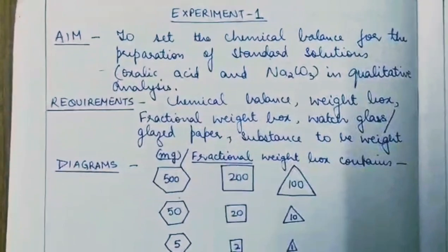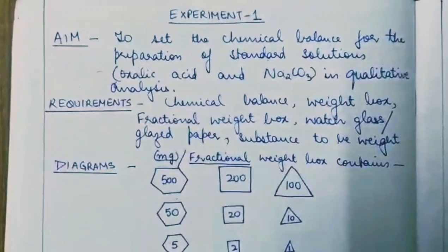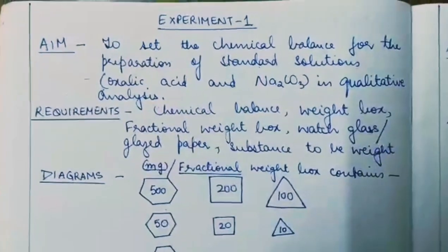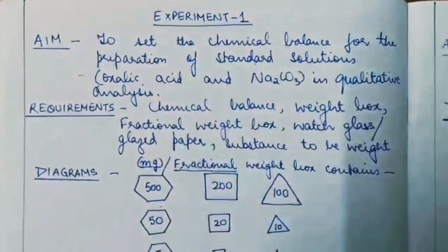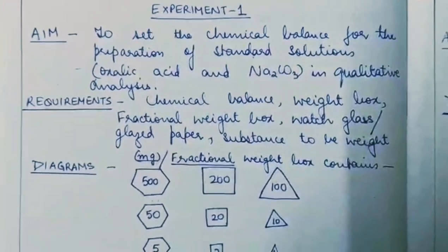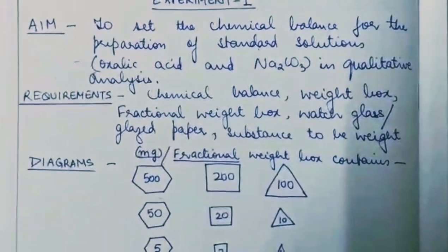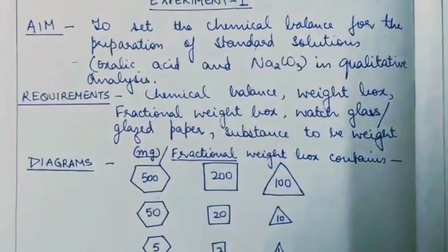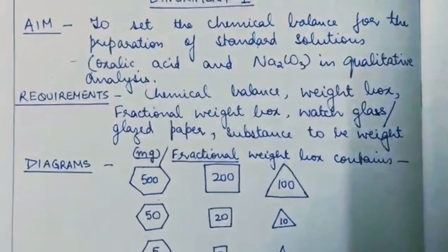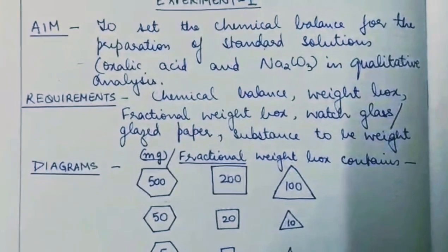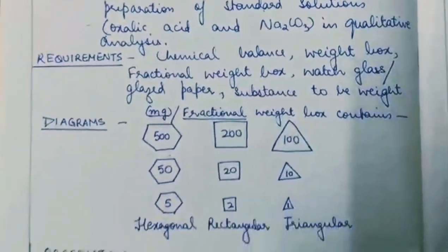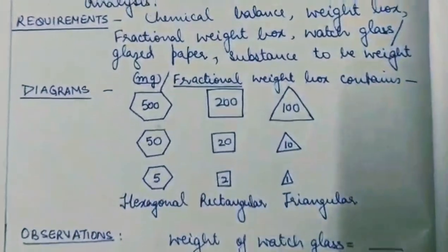On the right-hand side, you will again write the experiment number — the correct number in sequence which you have done — then the aim and requirements. You can make minor changes according to how you have performed the experiment in your lab.